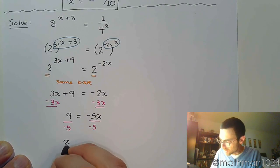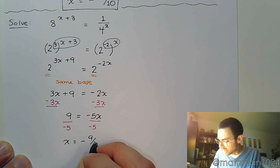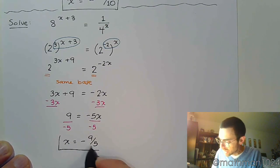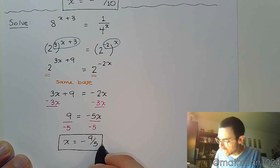And, we finish solving by dividing both sides by negative 5. When I do this, and I simplify, I have negative 9 over 5. Seems good enough. Let's go to our graphing calculator, and let's check.